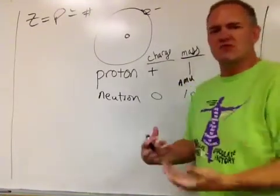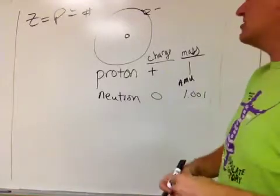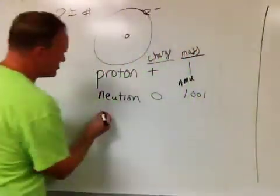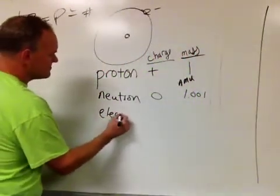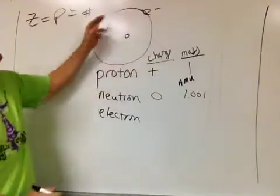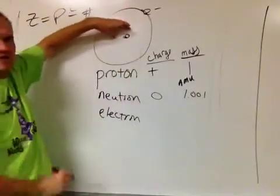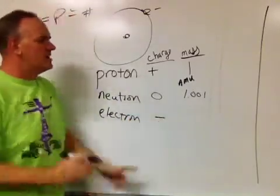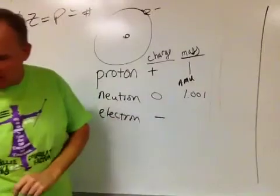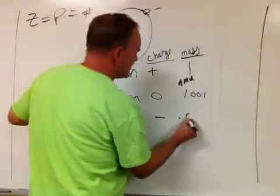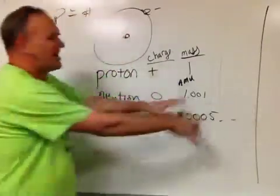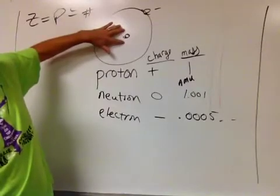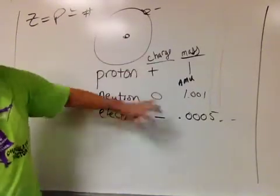So if you want to kind of keep track real simply, you can just kind of count up the protons and the neutrons, and that's how much the atom's nucleus weighs. Well, what about the electron? Well, the electron, they are not part of the nucleus. Remember, they're going around the outside. These protons and neutrons, they're all concentrated in here at the center. And so the electron has a negative charge, and their weight is incredibly small. It's like something like .0005. It doesn't really matter what the number is. Just kind of think of it as zero.